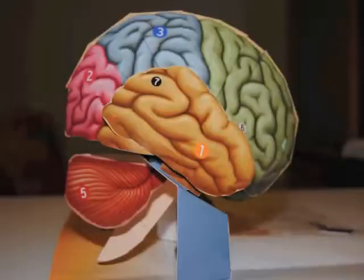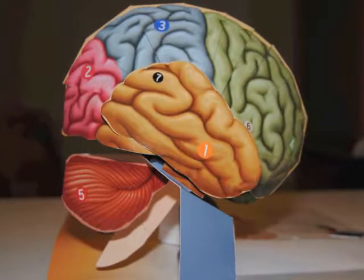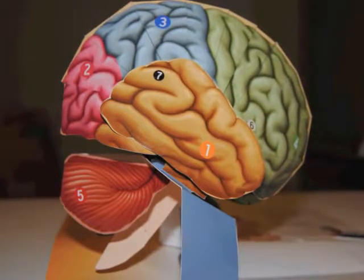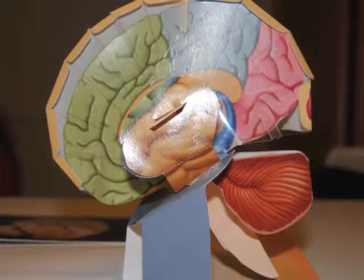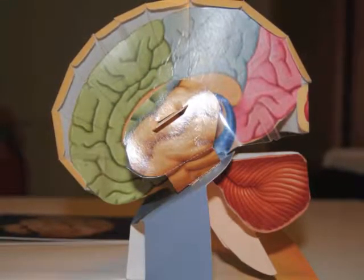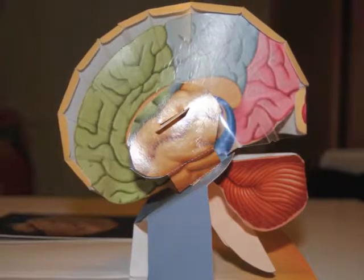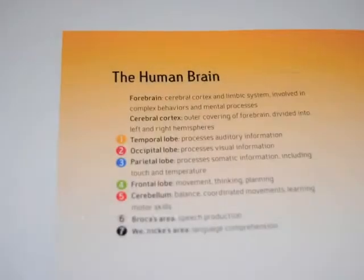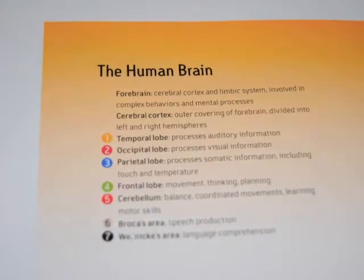The three-dimensional model brain is comprised of three different study tools for students. The four-brain model features one solid side with labels for the cerebral cortex. The reverse acetate side allows students to peer past the cerebral cortex to the interior of the forebrain to see how the limbic system is positioned internally among other structures. Numbered labels allow students to quiz themselves on the cerebral cortex structures and functions.